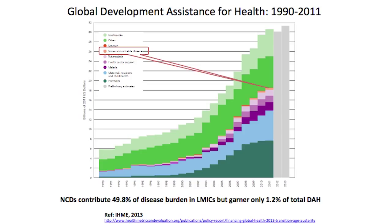Cancer cannot be transmitted from one person to another. You see that these non-communicable diseases — like cancer, diabetes, obesity — represent about 50% of the disease burden, but only garner about 1.2% of the total funds that are devoted to this. So we're way behind the eight ball from the very beginning in terms of global investments in this disease.